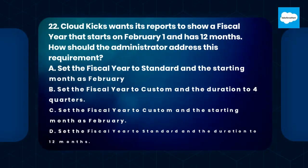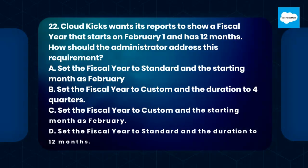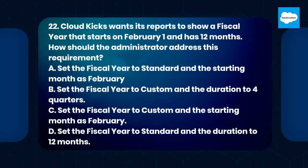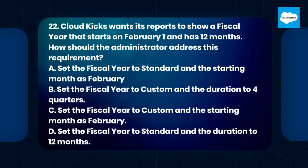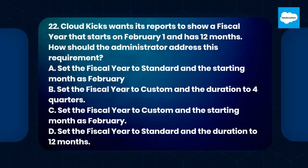Question 22. CloudKick's wants its reports to show a fiscal year that starts on February 1st and has 12 months. How should the administrator address this requirement? A. Set the fiscal year to standard and the starting month as February. B. Set the fiscal year to custom and the duration to four quarters. C. Set the fiscal year to custom and the starting month as February. D. Set the fiscal year to standard and the duration to 12 months.